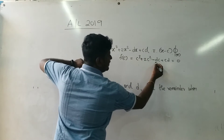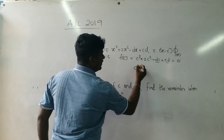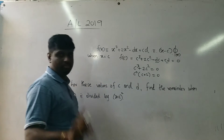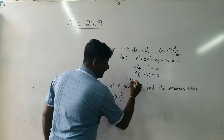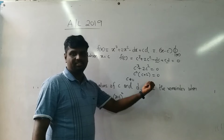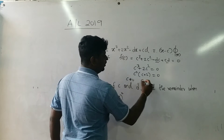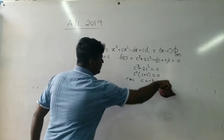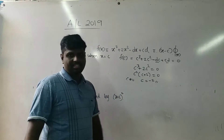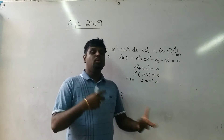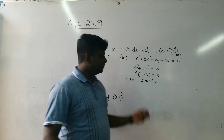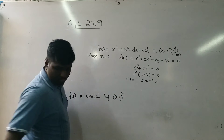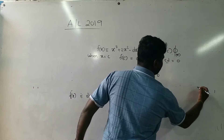The dc terms cancel, so we get c³ + 2c² equals zero. Factoring out c², we get c²(c + 2) equals zero. Since c is non-zero, we cannot have c equals zero, therefore c equals minus 2. This is a simple question — unlike the usual simultaneous equations type, we get c directly.